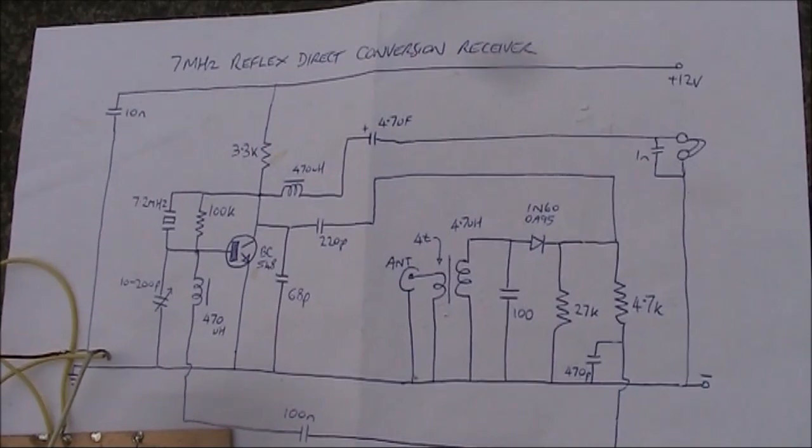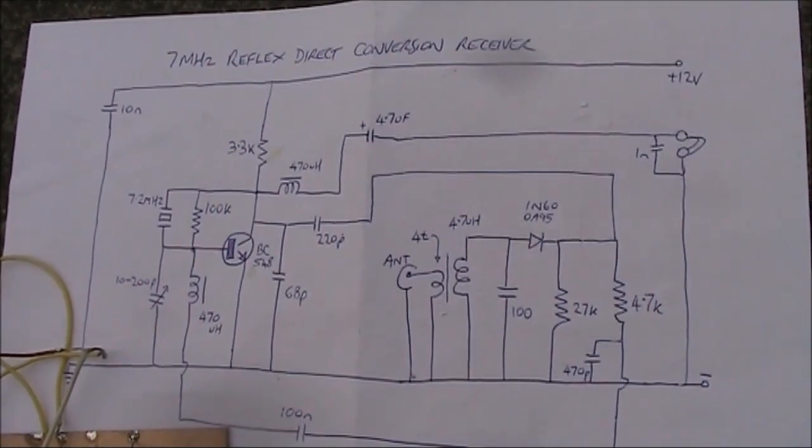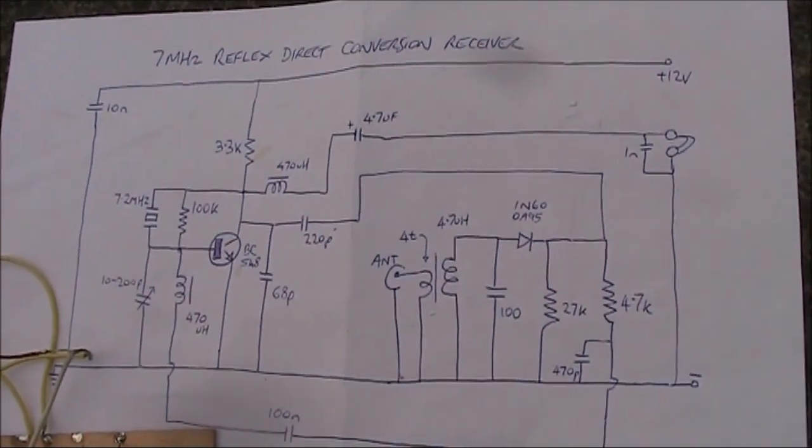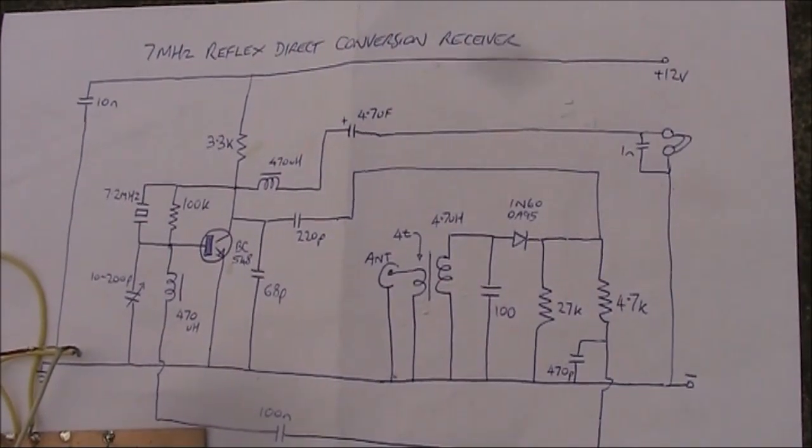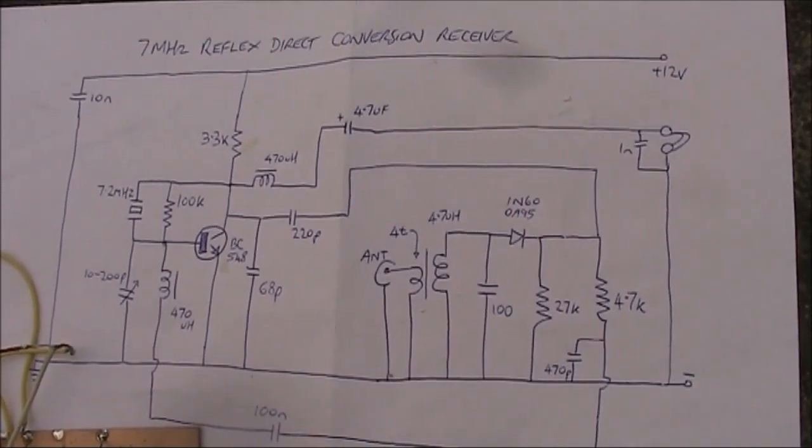A quick video on a reflex type direct conversion receiver. It's an unusual circuit because the transistor RF oscillator also amplifies audio.